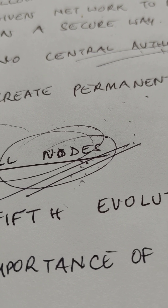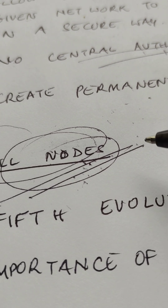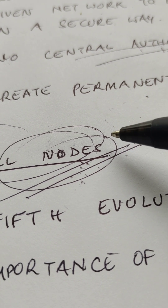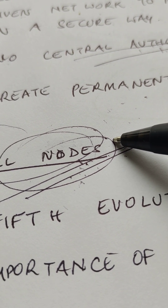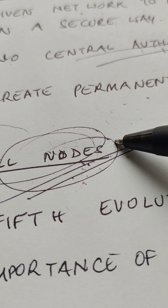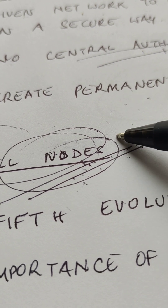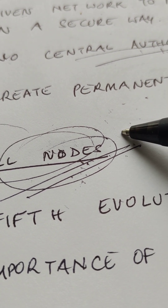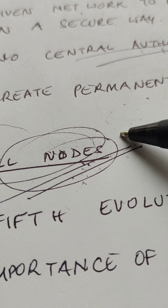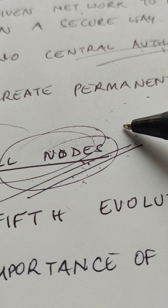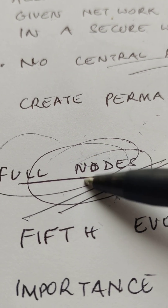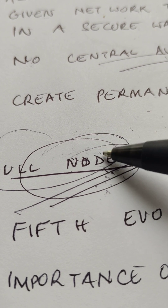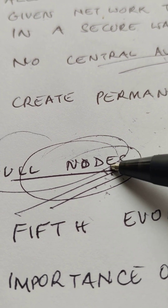Basically the software pays the hardware to operate. The software is the blockchain protocol. Well-known blockchain protocols include Bitcoin, Ethereum, Ripple, Bitcoin Cash, and Stellar. The hardware consists of the full nodes — the computers that make up the network in more than one location — that are securing the data in the network.